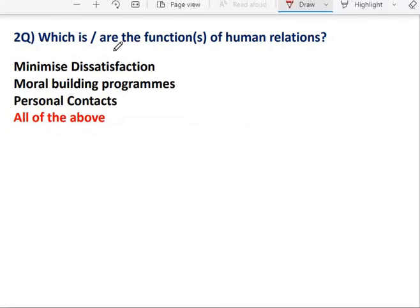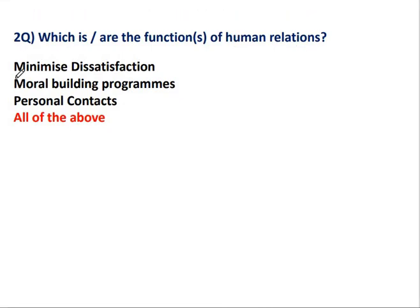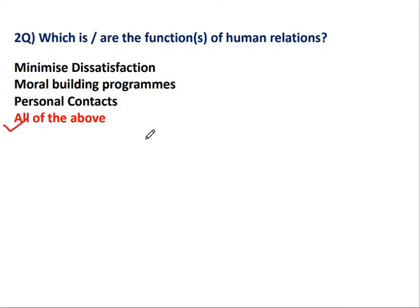Question 2: Which is or are the Function of Human Relations? इसमें कौन सा Function है Human Relations का? Option A: Minimize the Dissatisfaction, B: Moral Building Program, C: Personal Contact, and D: All of the above. The correct answer is D — All of the above. इसमें Dissatisfaction को Minimize करते हैं, Moral Building बनाते हैं, Personal Contact maintain करते हैं — these all are the Functions of Human Relations.